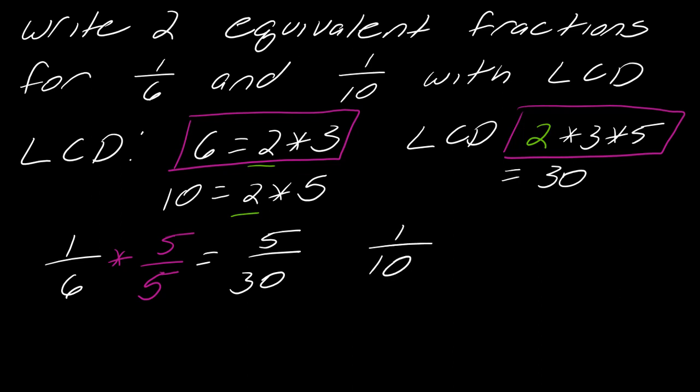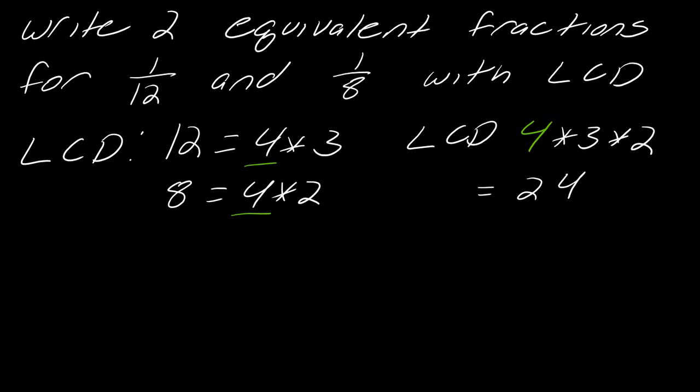The same thing can be said of 1/10. What do I multiply 1/10 by or what do I multiply 10 by to get to 30? I multiply the top and bottom by 3, so this becomes 3 over 30. That's the idea. Pause the video here and try to finish this with one of our other examples, 1/12 and 1/8. I've got the roadmap up here. Hit play when you think you've got it.